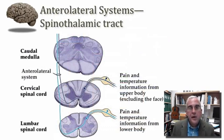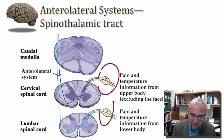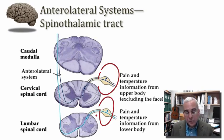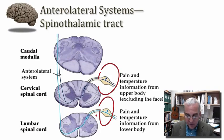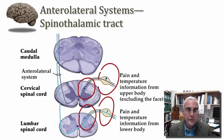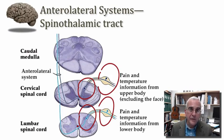Let's look first at our spinothalamic tract. The first-order neuron is a dorsal root ganglion cell, and we've already considered in a previous session the distribution of the free nerve ending in the tissues, so we're not going to look at that here. Rather, we're going to focus on the central termination of this fiber in the dorsal horn of the spinal cord. The first-order afferent of our pain system terminates in the dorsal horn — that's where we find our first synapse, not up in the caudal medulla, but right at the level of entrance of that first-order axon.